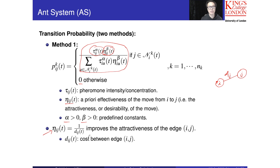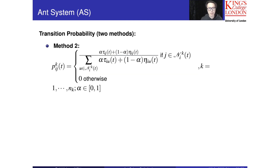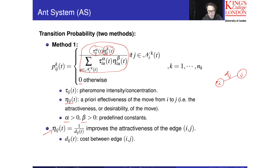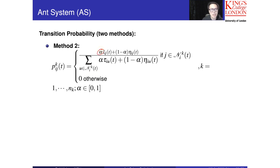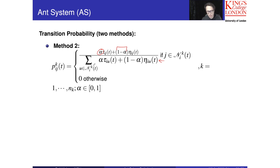Alpha and beta are predefined constants which control the relative effect of each term. Method 2 is something similar — we have tau-ij as well as eta. Instead of multiplication, we use interpolation. We choose a constant alpha, and then 1 minus alpha, so we interpolate between tau and eta. The denominator remains the same. Once we define the probability, we can compute the accumulated transition probability and use a random number to determine which node to choose.